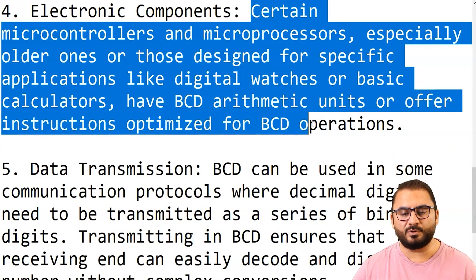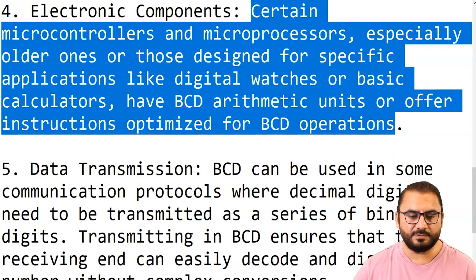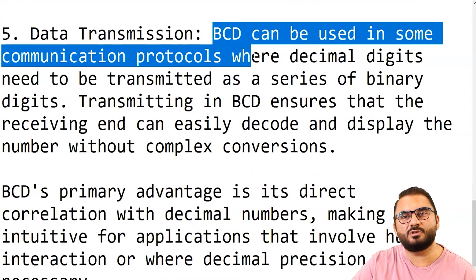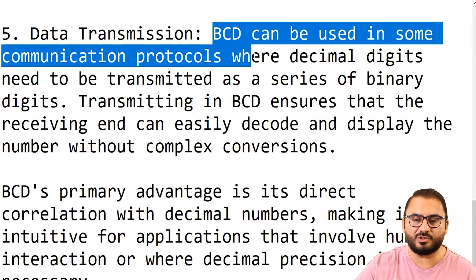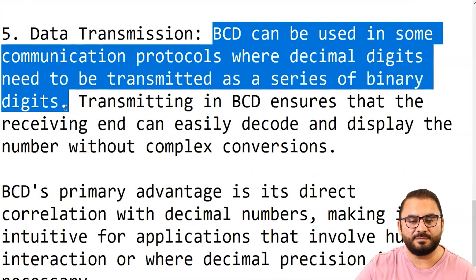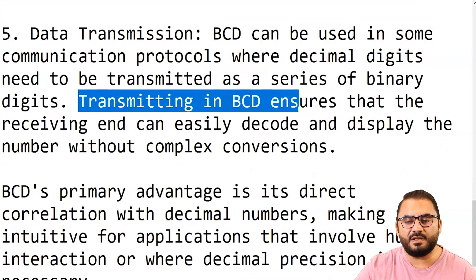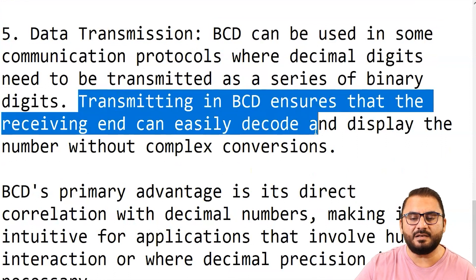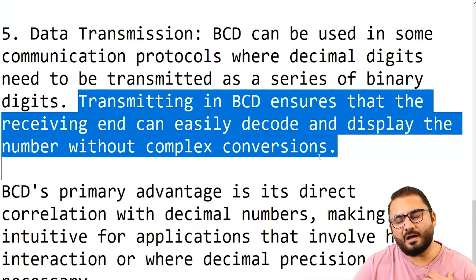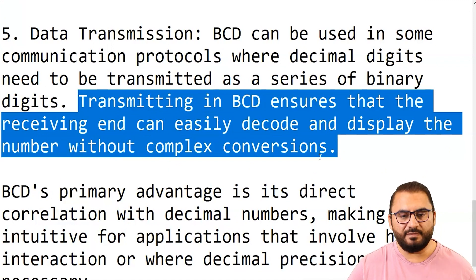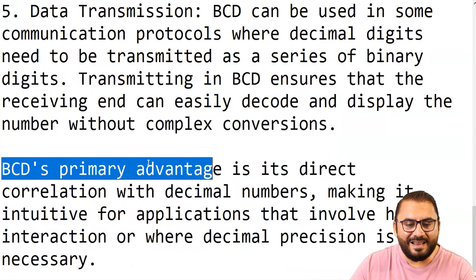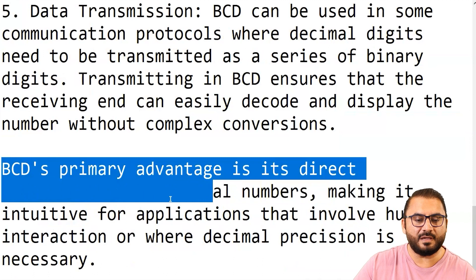Fifth, data transmission: BCD can be used in some communication protocols — software that enables communication — where decimal digits need to be transmitted as a series of binary digits. Transmitting in BCD ensures that the receiving end can easily decode and display the number without complex operations, since after every four bits we have a clear representation of one decimal digit.